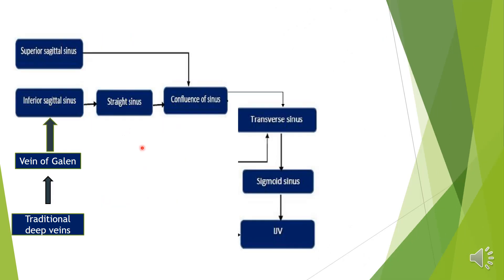This is the schematic representation of the venous drainage system. The inferior sagittal sinus empties into the confluence of sinuses, and forms the straight sinus. It continues as the transverse sinus, sigmoid sinus and finally drains into the internal jugular vein. The deep tributarial veins form the vein of Galen, which meets at the inferior sagittal sinus and empties into the straight sinus.